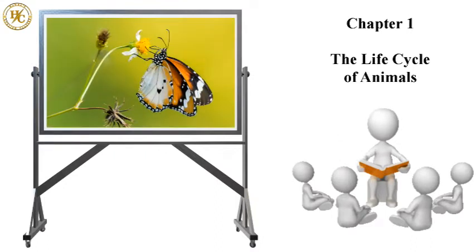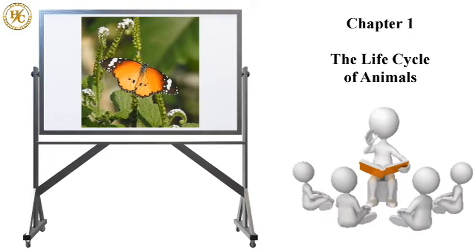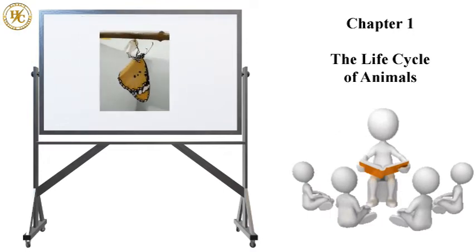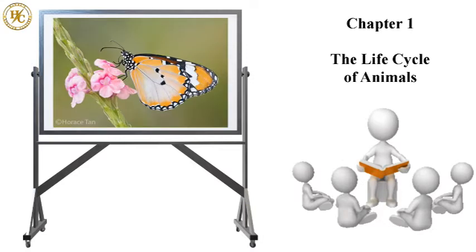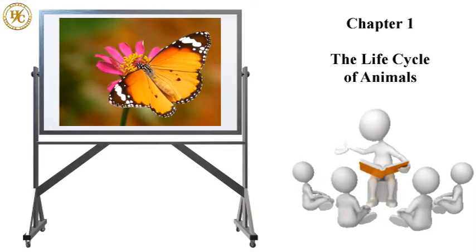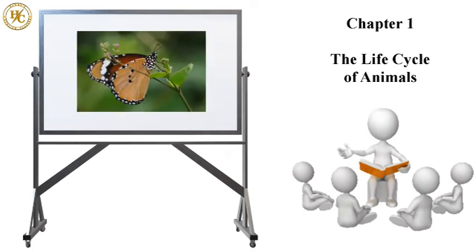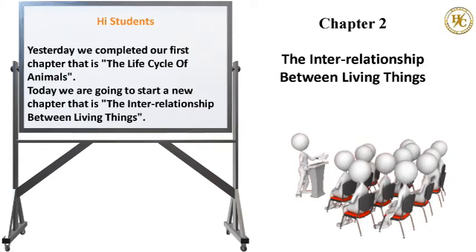The plain tiger butterfly is now fully grown and has four attractive wings and six long legs. All butterflies go through these stages to become an adult butterfly.